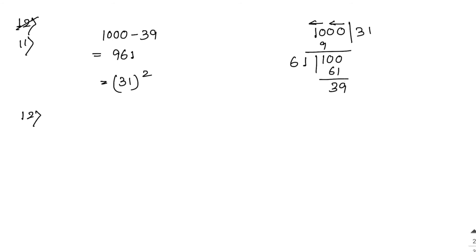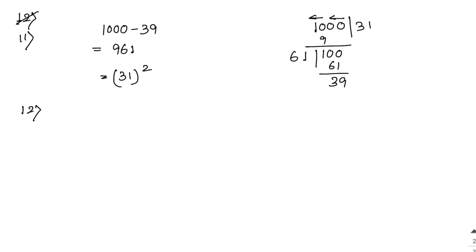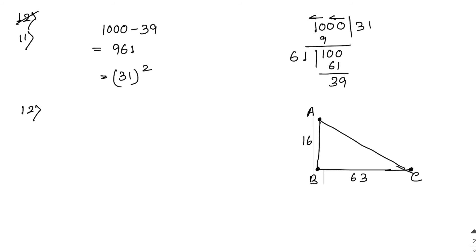Sum number 13: Amit walks 16 meters south from his house, then turns east and walks 63 meters to point C, which is his friend's house. While returning, he walks diagonally from C back to his house — that is, along line AC. Since angle B is 90 degrees, we can apply the Pythagoras theorem: AC squared equals AB squared plus BC squared.